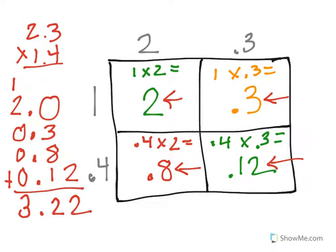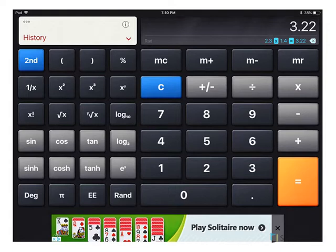Just to be sure, I plugged my problem into a calculator, where I had 2.3 times 1.4, and I was given 3.22.